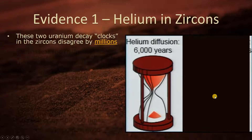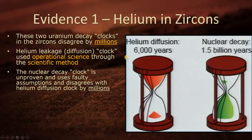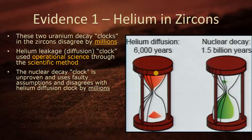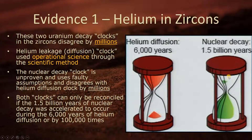Evidence 1: helium in the zircons. These two uranium decay clocks in the zircons disagree by millions of years. The helium leakage diffusion clock, used through the scientific method, gave a date of 6,000 years. The nuclear decay clock uses faulty assumptions and disagrees with the helium clock by millions. Both clocks can only be reconciled if the nuclear decay — 1.5 billion years' worth — was accelerated to occur in 6,000 years of helium diffusion, accelerated by 100,000 times during the global flood.